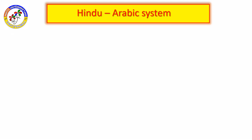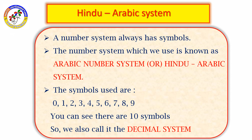Now, let us see the Hindu Arabic system. A number system always has symbols. The number system which we use is known as the Arabic number system or Hindu Arabic system. The symbols used are 0, 1, 2, 3, 4, 5, 6, 7, 8, 9. So, you can see there are 10 symbols. How many symbols do we have? 10 symbols. So, we also call it the decimal system. Is it clear?